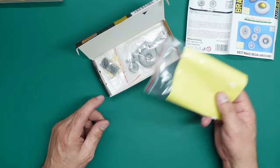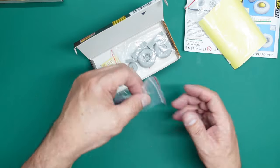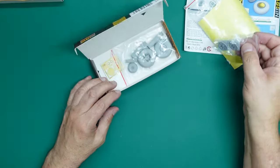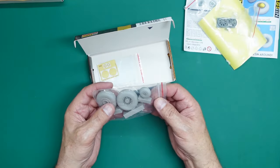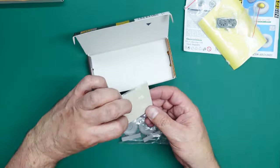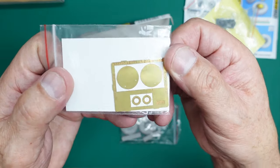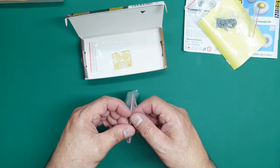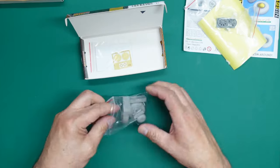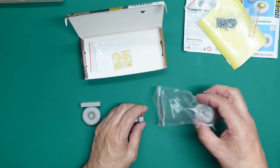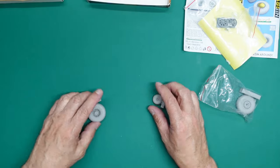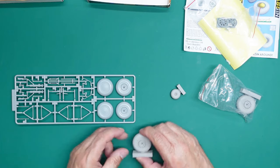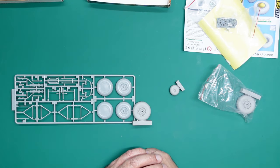You've got the masks for masking the wheels for painting, these beautiful resin 3D printed spoked parts which look lovely, the actual resin wheels themselves, and the PE discs for the nose and main gear.